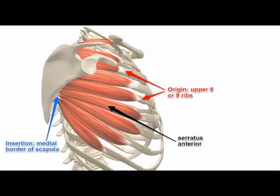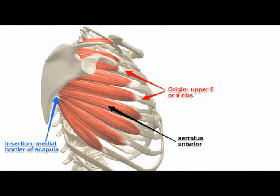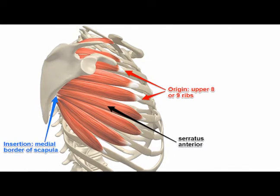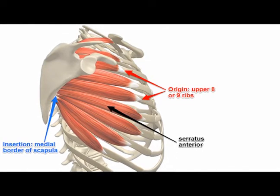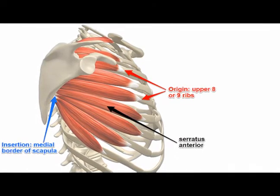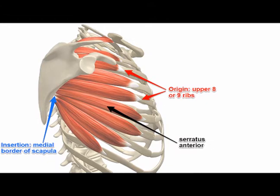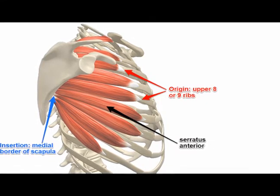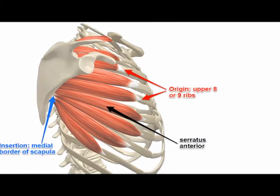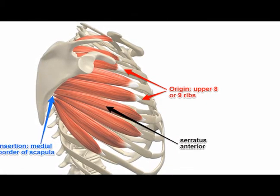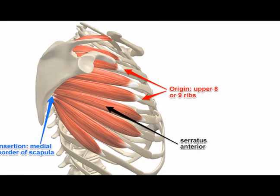Protraction is when the scapula moves away from the spine. Concentric actions of the serratus anterior, the pectoralis major, and the pectoralis minor are the source of scapular protraction.